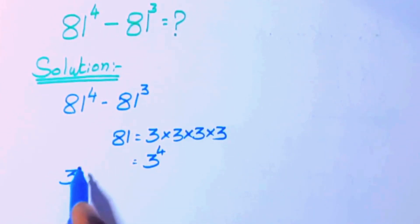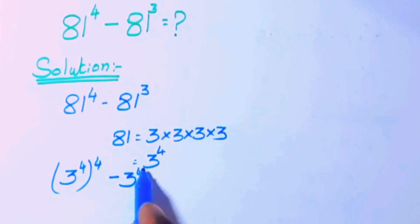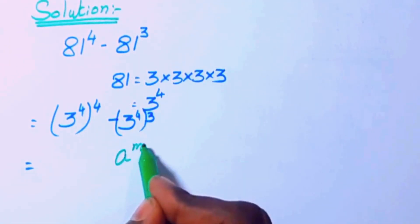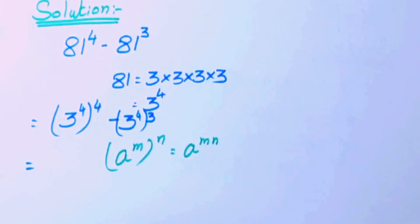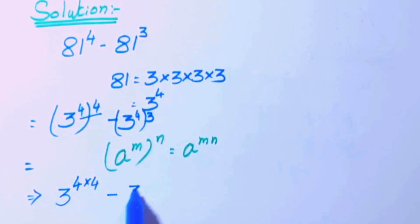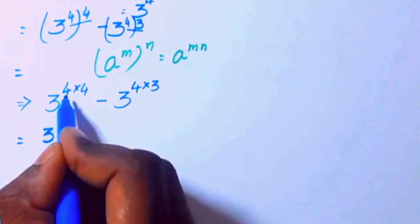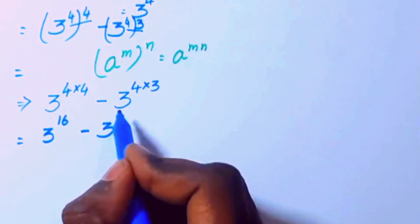So we get 3 power 4, whole power 4, minus 3 power 4, whole power 3. Now using the identity a power m, whole power n, equals a power m times n. So 3 power 4 times 4 is 16, minus 3 power 4 times 3 is 12. This gives us 3 power 16 minus 3 power 12.